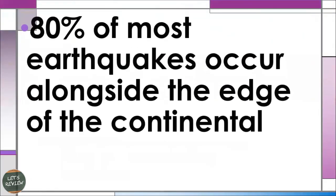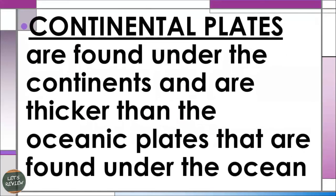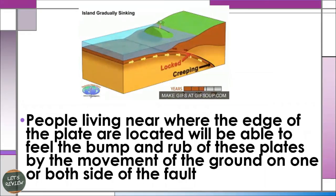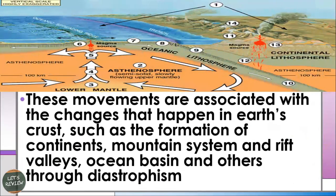About 80% of most earthquakes occur alongside the edge of the continental plates. These continental plates are found under the continents and are thicker than the ocean plates found under the ocean. People living near the edge of these plates will be able to feel the bump and rub of the plates through the movement of the ground. These movements are associated with changes in Earth's crust such as the formation of continents, mountains, river valleys, and ocean basins through diastrophism.